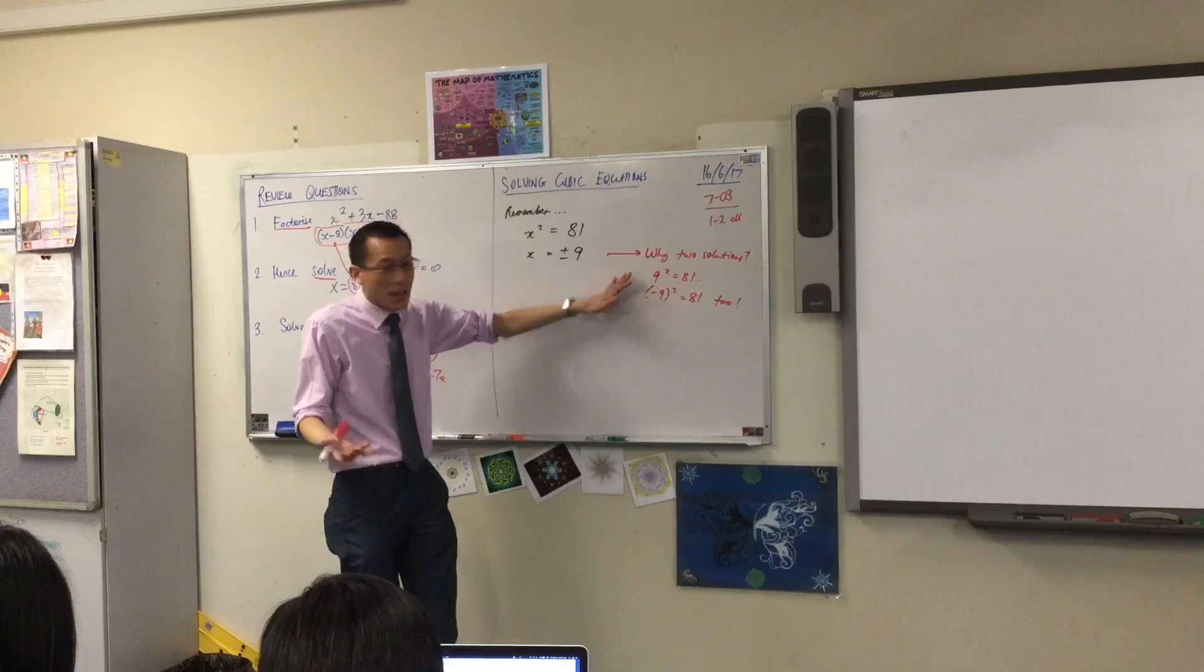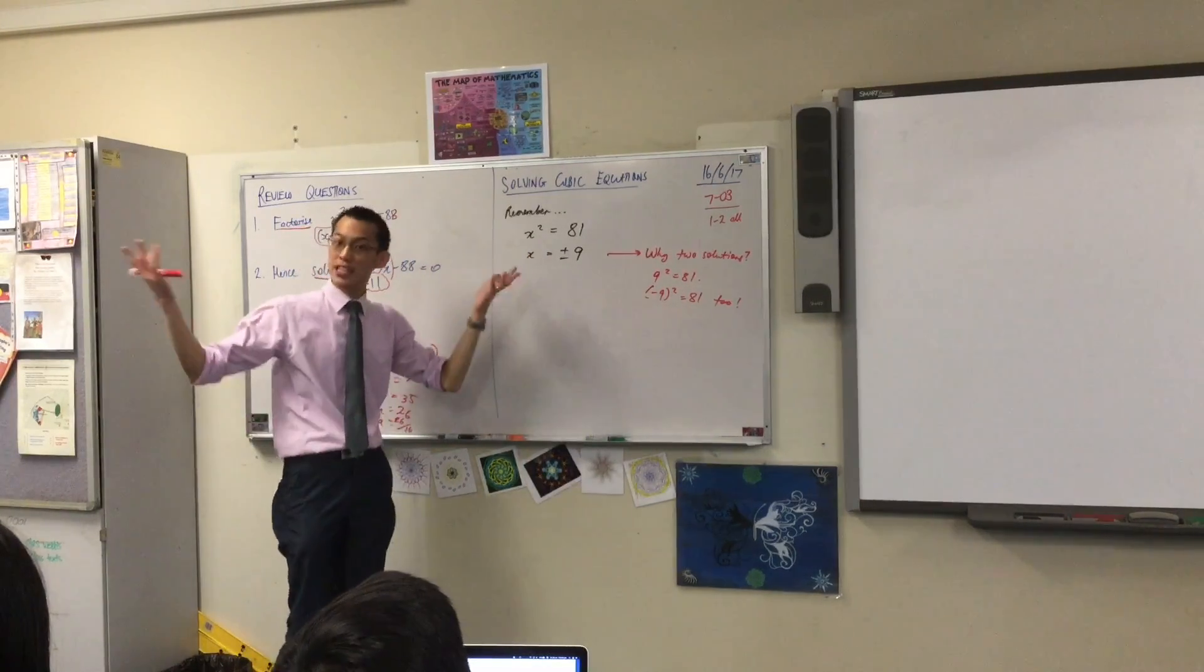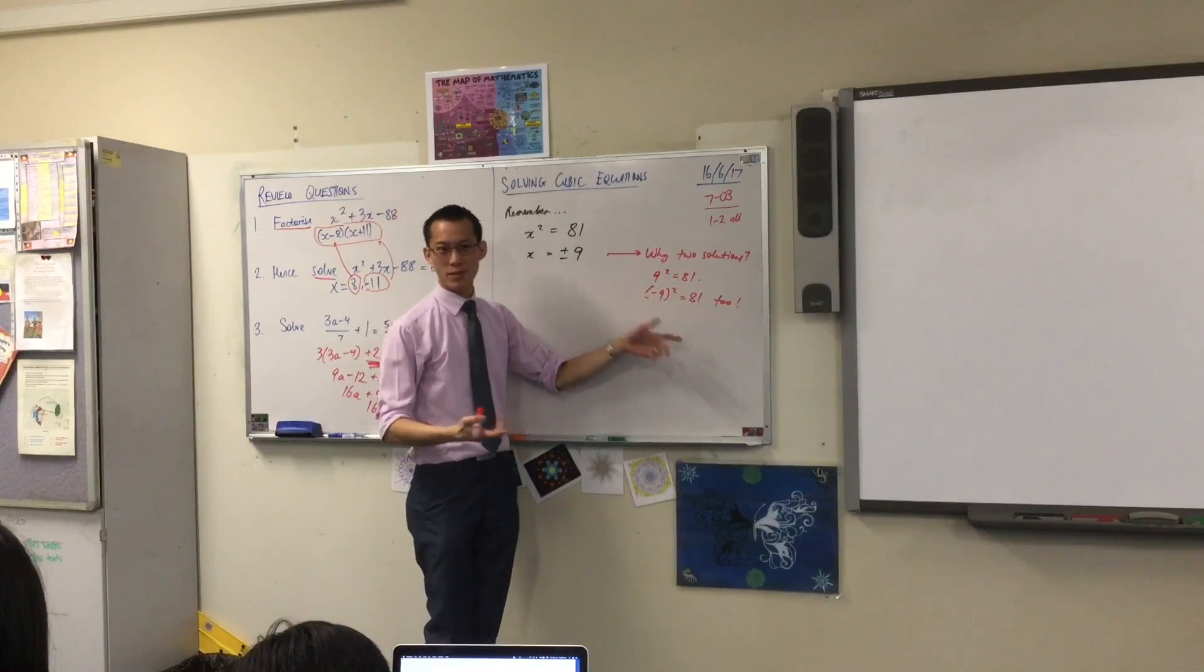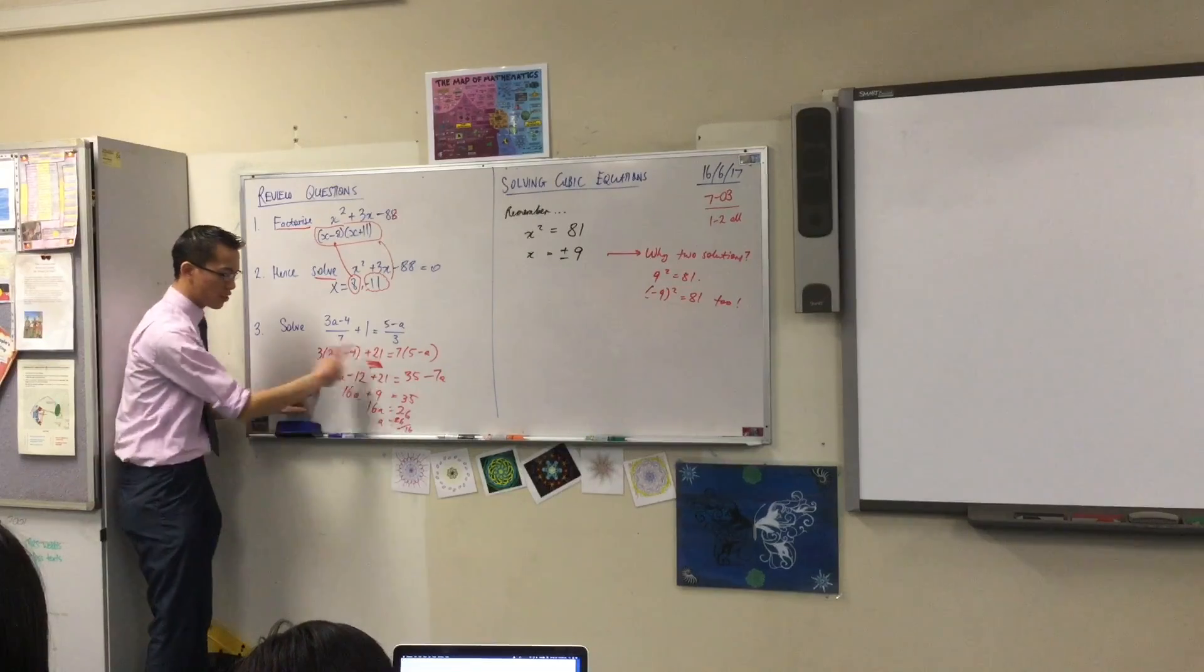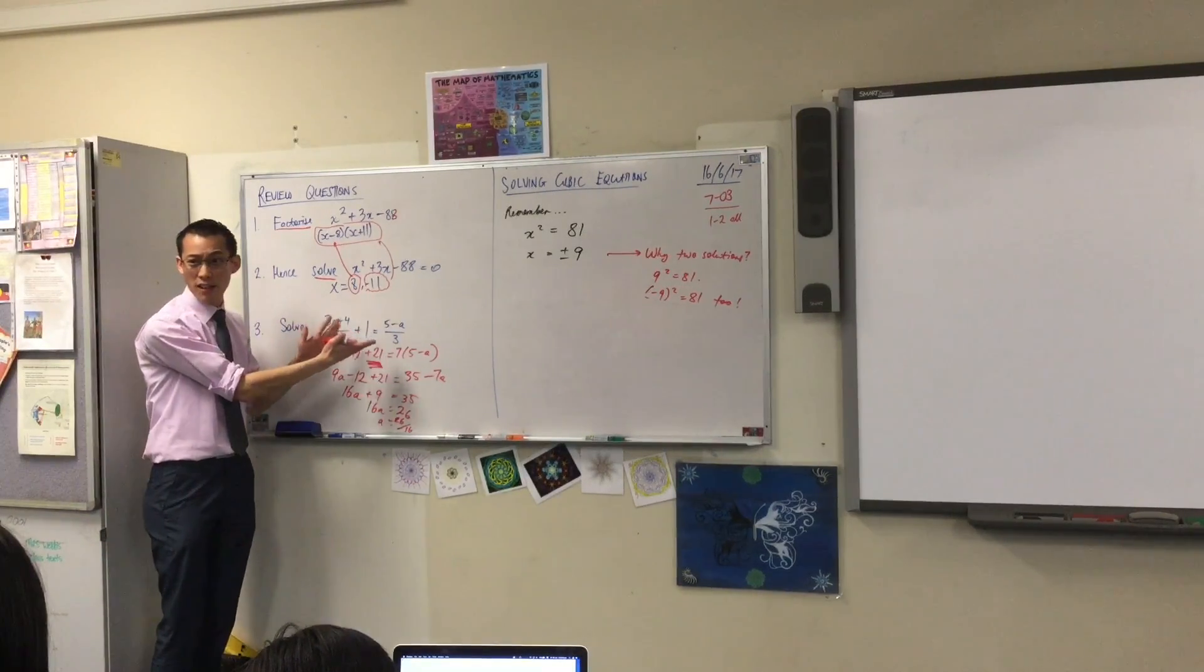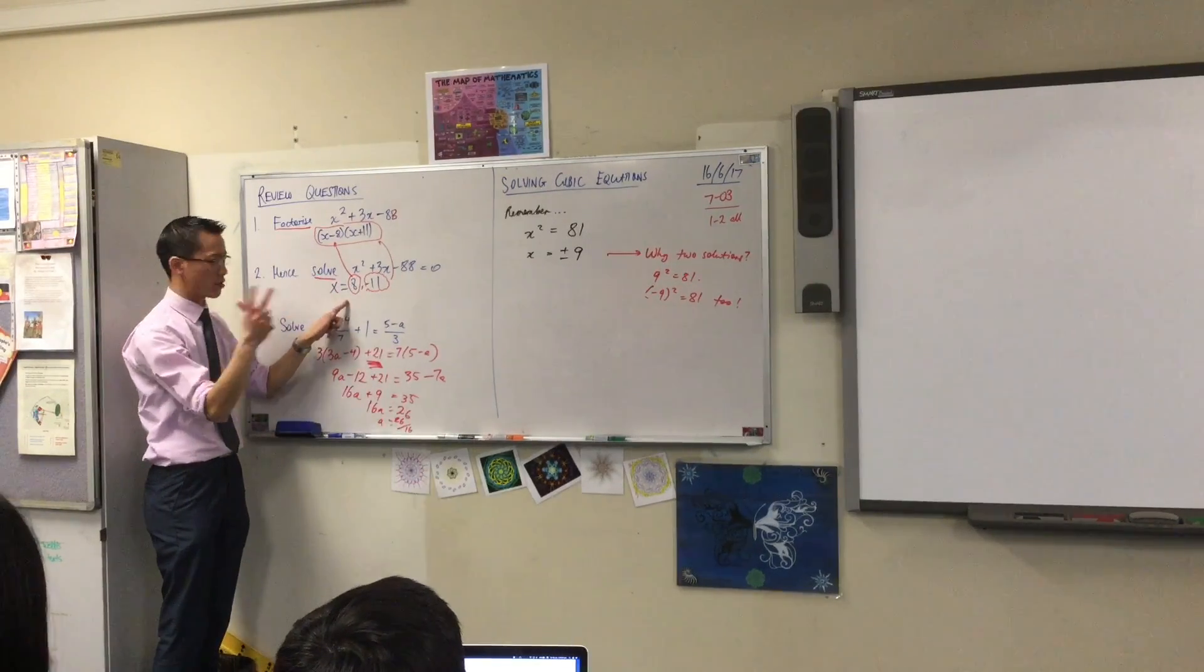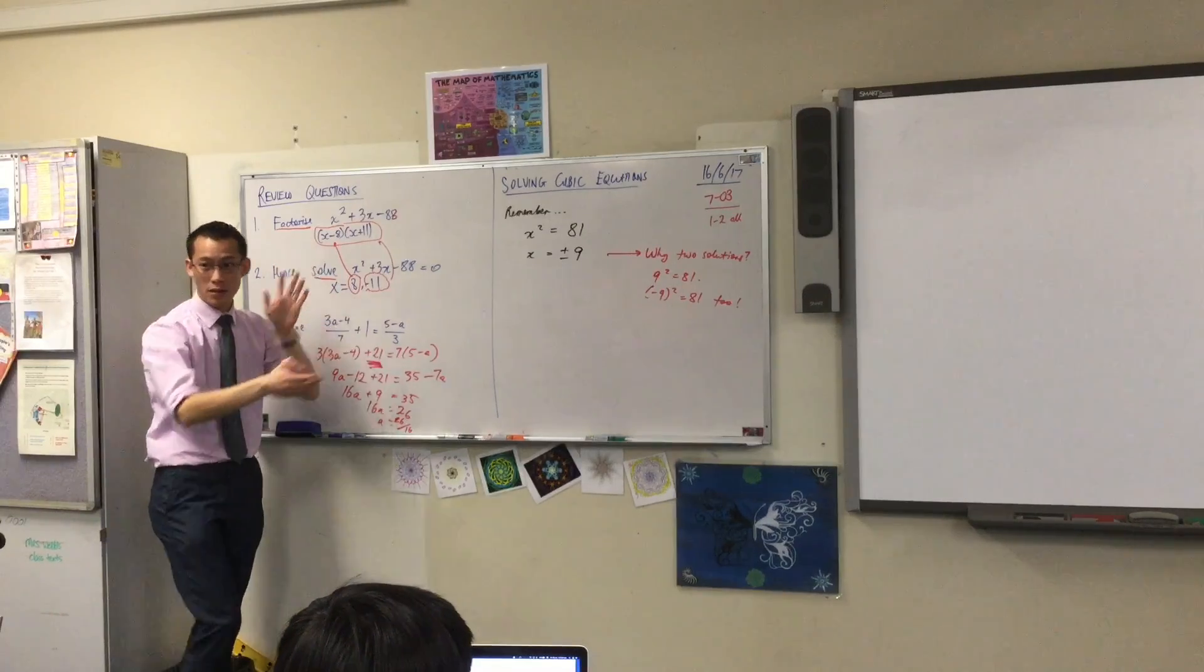If there were like 15 numbers you could put into here that would all work, then there would be 15 solutions. It's just because I can find more numbers that satisfy it. When you come back to this question, which we did earlier, this question has one solution because there's only a single number you can put in here that works. But this one had two solutions because you can put either of these and they would both equal to 0 once you evaluate.